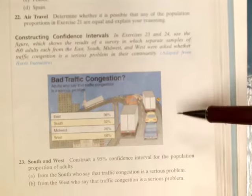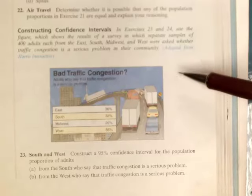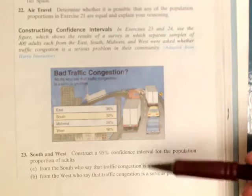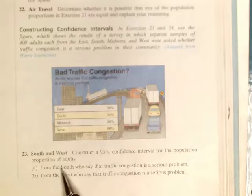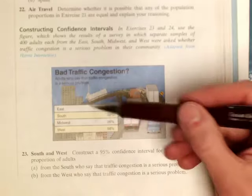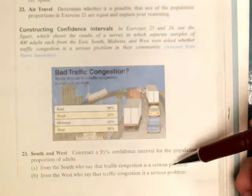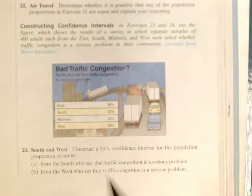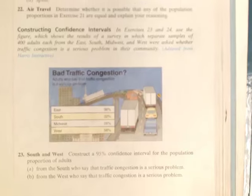All right, I want to do this problem here, which refers to this graph right here. I want to take a look at constructing a 95% confidence interval for adults from the south who say that traffic congestion is a serious problem, and from the west who say that traffic congestion is a serious problem.